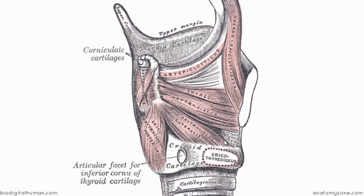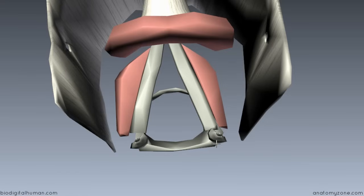In this diagram, you can see the lateral cricoarytenoid sitting on the upper part of the cricoid arch. This is a view from the medial aspect — it's been dissected in half with the thyroid cartilage cut — and you're looking at the medial aspect of the lateral cricoarytenoid. It originates on the upper part of the cricoid cartilage and inserts onto the muscular process, producing the opposite action of the posterior cricoarytenoid muscle. Remember, all intrinsic muscles of the larynx are innervated by the recurrent laryngeal nerve, except for the cricothyroid muscle, which is innervated by the external branch of the superior laryngeal nerve.